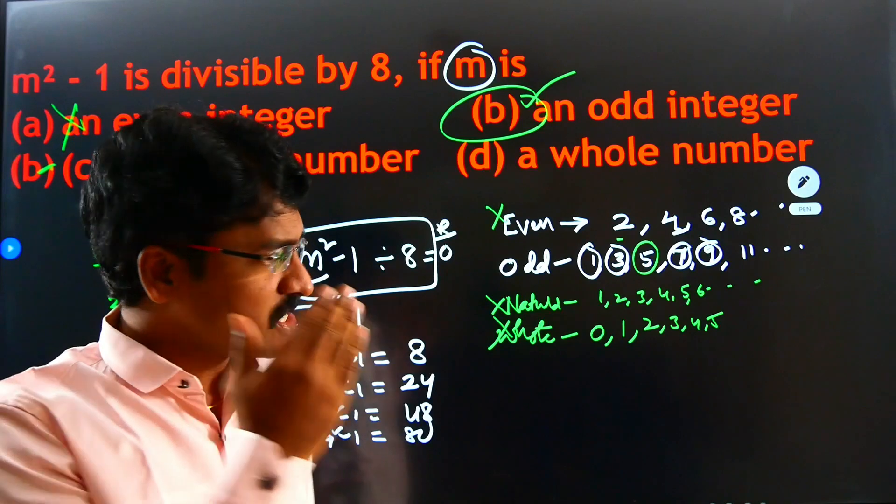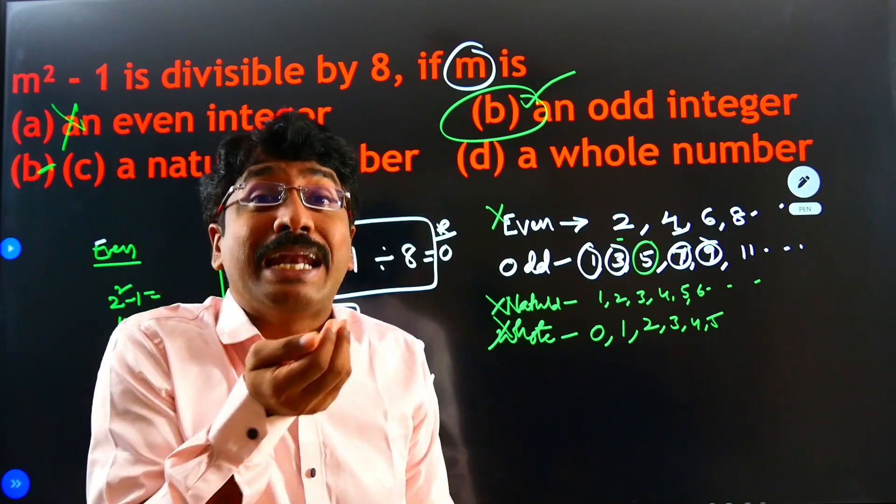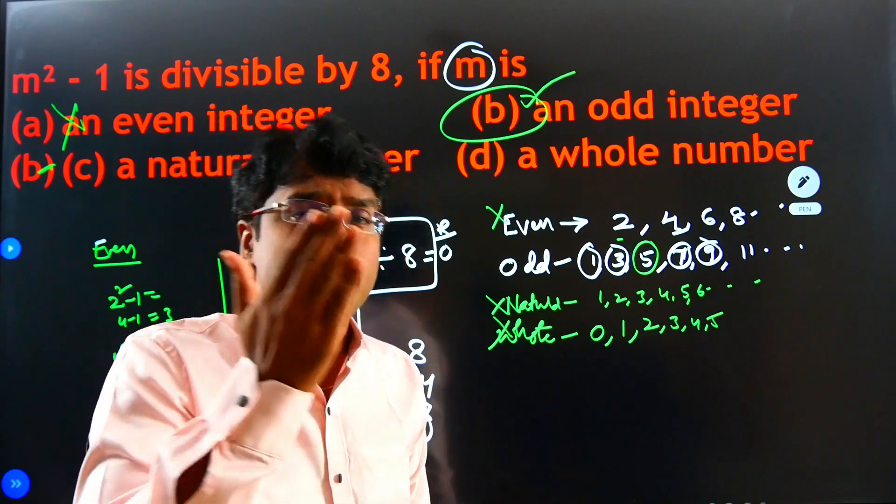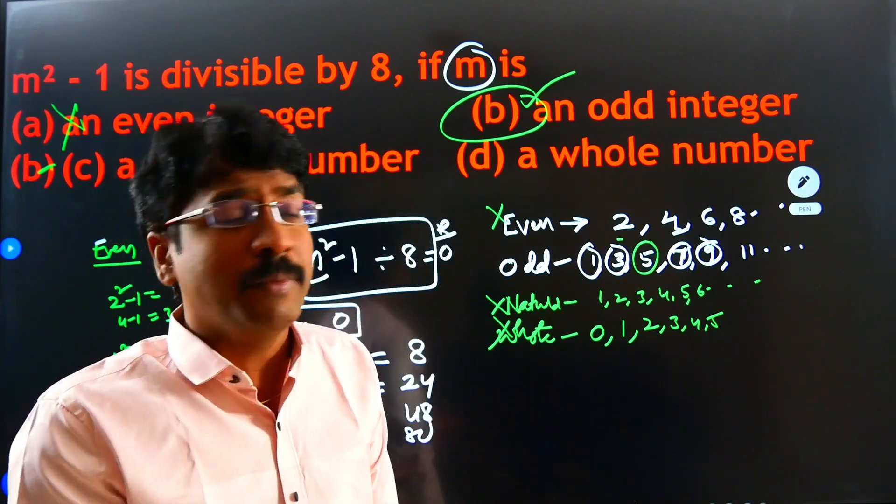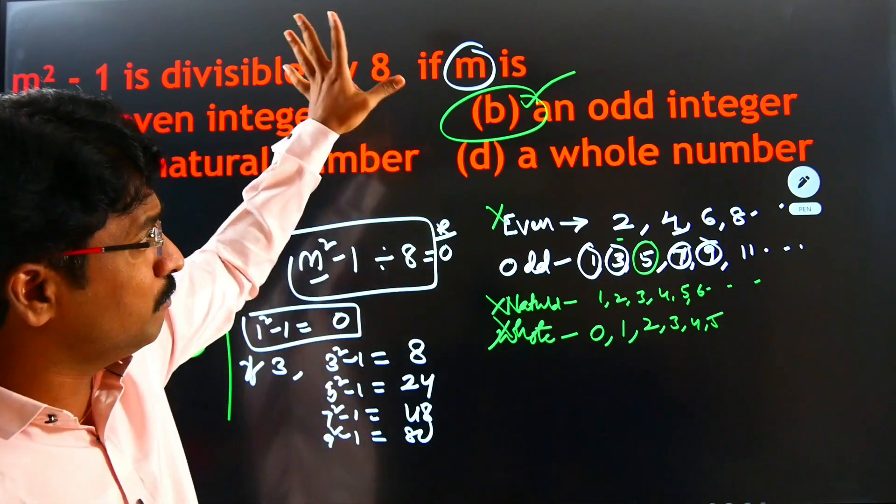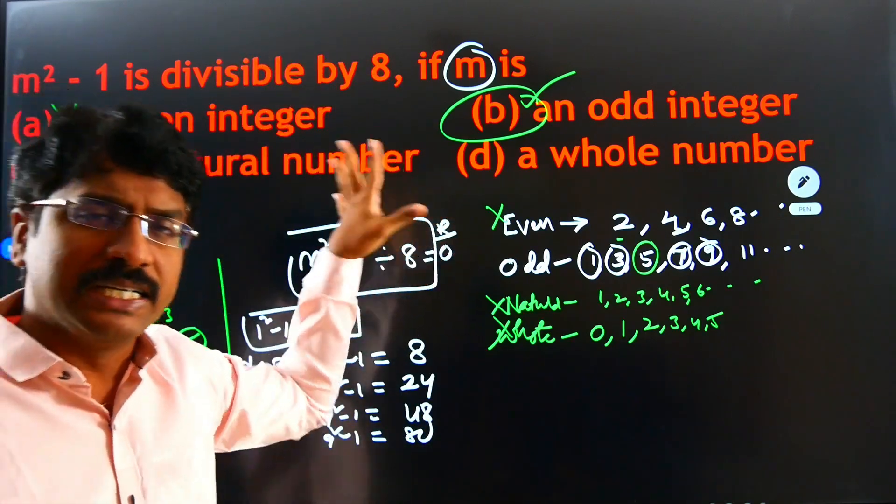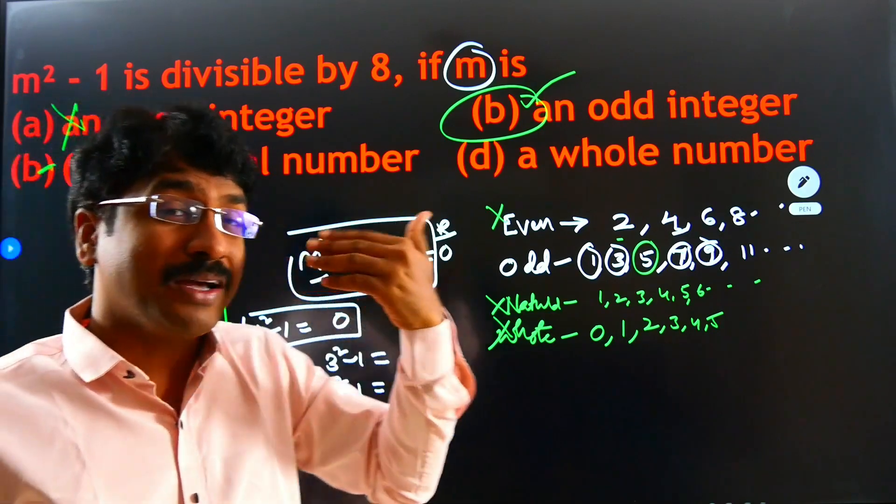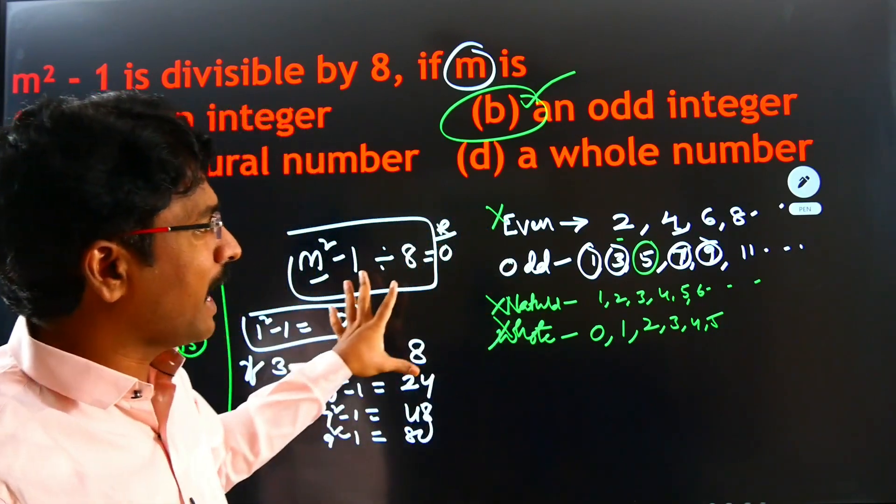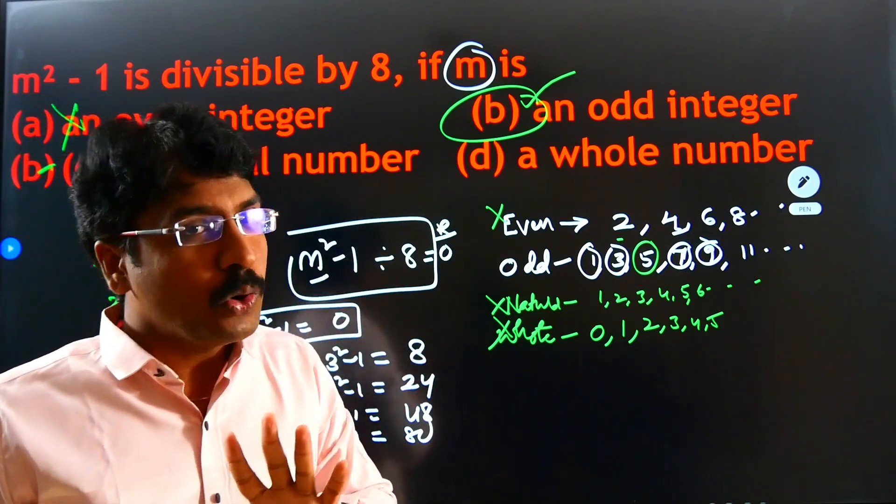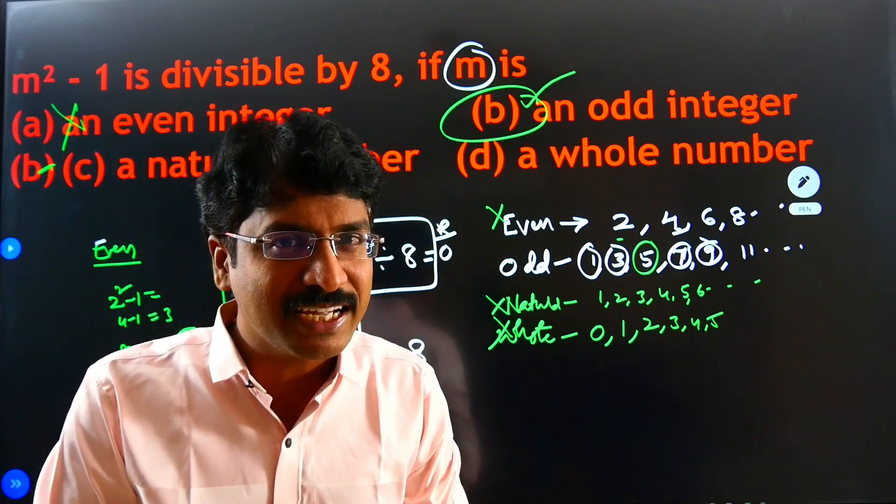This type of question will come from the number system, from the whole numbers. Already we studied what are the whole numbers, what are the even numbers, what are the odd numbers, what are the prime numbers. But how the sums will come? Like this, the sums will come. Definitely these types of sums will come in the final examination. So, be practical. And once again, watch this video. Then you will understand very well. Okay, my dear students. All the best, everyone. Take care. And bye-bye.